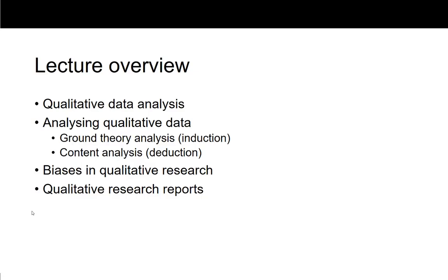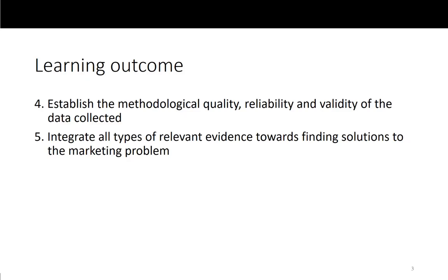I'm going to talk about what qualitative data analysis is, the different approaches to analyzing qualitative data, some of the biases in qualitative research and how to present your findings. This relates to learning outcomes 4 and 5, which is establishing methodological quality, reliability and validity of the data collected — in this case qualitative data. It also relates to learning outcome 5, where we integrate all types of relevant evidence towards finding solutions to the marketing problem, looking at primary qualitative data as a form of evidence.